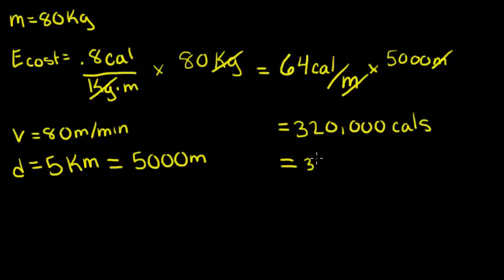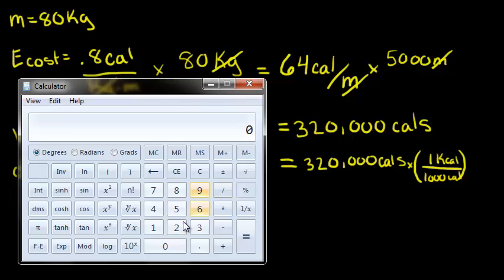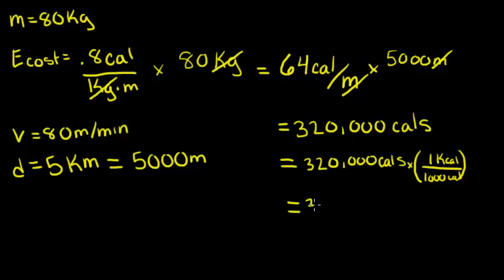To do so, we can do a simple multiplication. We know that there are 1,000 calories in one kilocalorie. Plugging this into our calculator, we find that he burns 320 kilocalories.